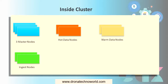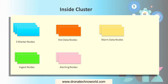The next node is the alerting node. As the name suggests, these nodes are used for executing alerting jobs. Next in the queue is the ML node, or machine learning node. As we know, Elasticsearch supports machine learning, so for that we need to assign dedicated nodes, and these ML nodes are used for executing machine learning jobs.